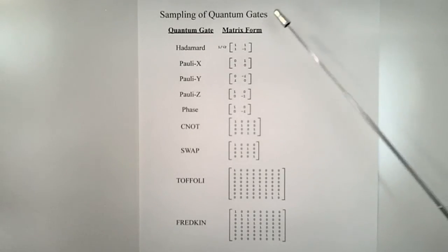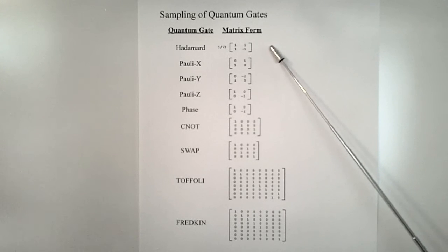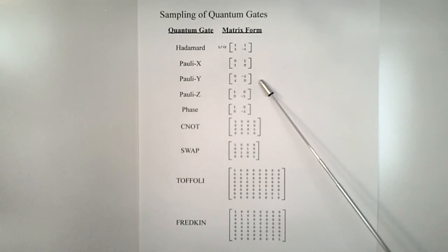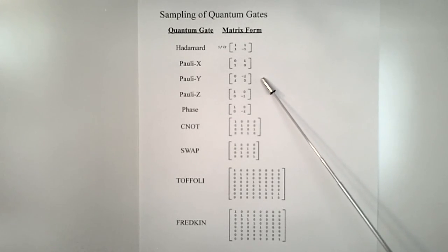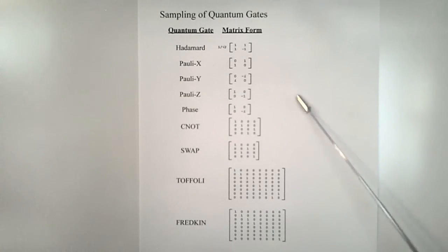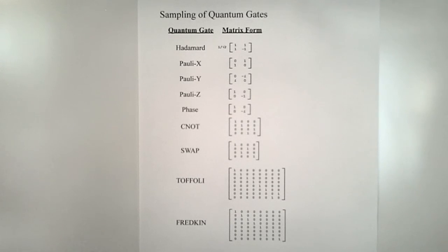Here is a sampling of some quantum gates: the Hadamard, the Pauli-X, the Pauli-Y, the Pauli-Z, the phase shift, and others. Note that the matrix entries may include complex numbers. I will cover these gates in more detail in a later video.